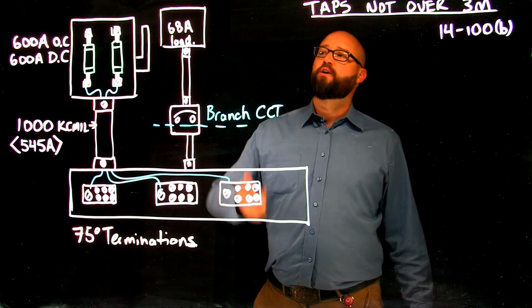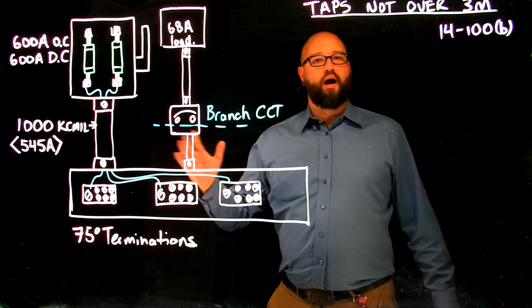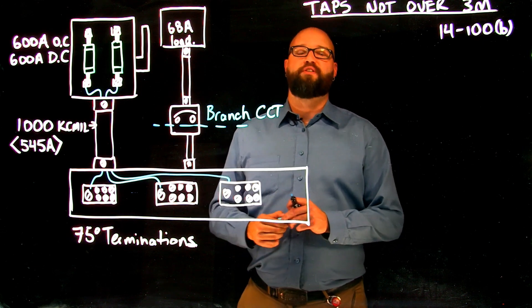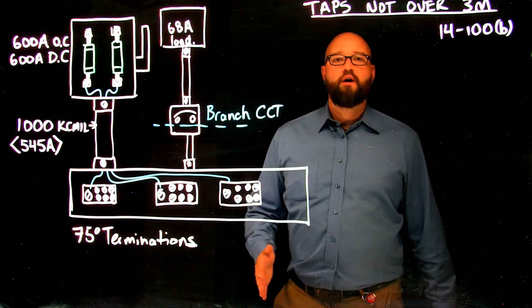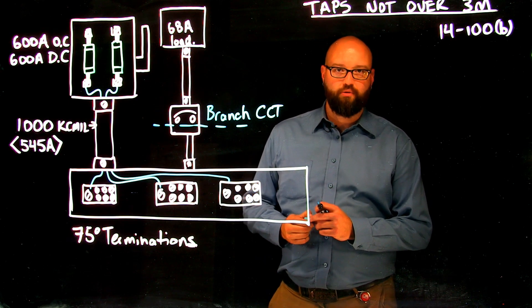Now, when we think about that, we're talking about a 68 amp load here. I don't really want to feed a 68 amp load with a thousand KC mil. It's not very practical. It's not very economical. Obviously, we want to downsize that conductor if possible.